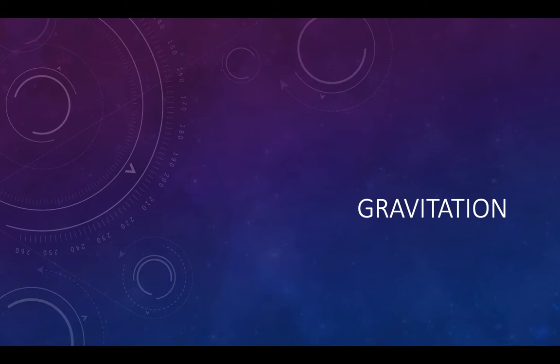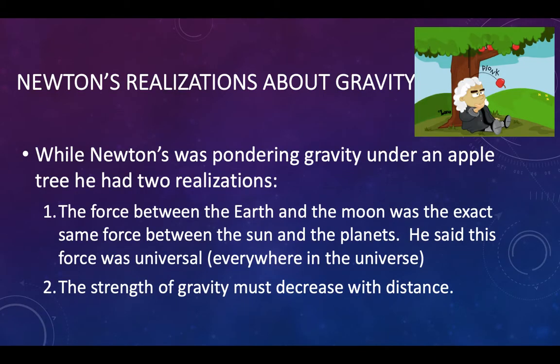Hello AP Physics students. We're going to make our way through this lecture on Newton's law of universal gravitation. Newton, when he finished the three laws of motion, still noticed that there were some predictable things about the motion of objects moving through the air on Earth as well as through the heavens. He concluded that the same force causing an apple to fall — that proverbial story — was the same force causing the Moon to move in its orbit.